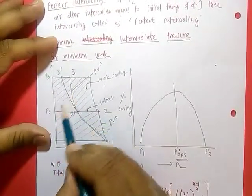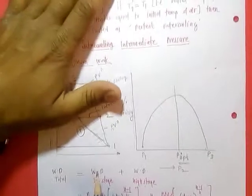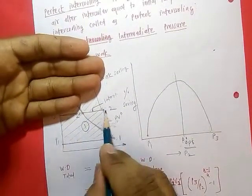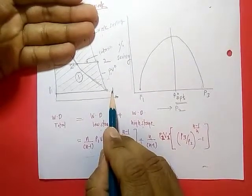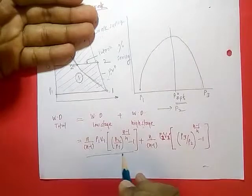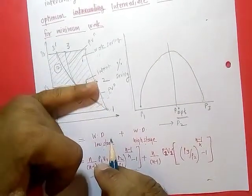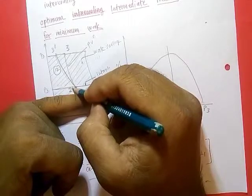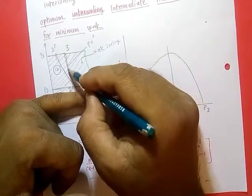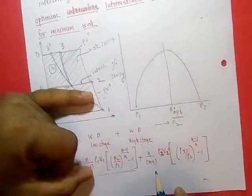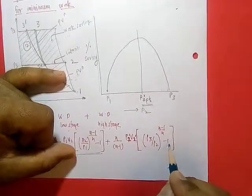For the first stage, if you consider only this part as a single-stage compressor neglecting clearance, at entry the state is p1, v1. We have the work done equation neglecting clearance. For the high stage, entry state is 2-dash, corresponding pressure is p2-dash, volume is v2-dash, and by process pv^n, work done in high stage is [n/(n-1)] · p2-dash · v2-dash · [(p3/p2)^((n-1)/n) − 1].